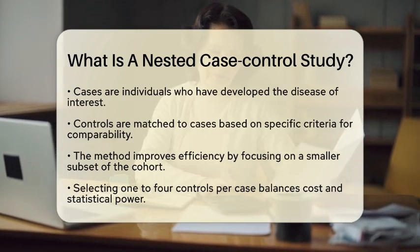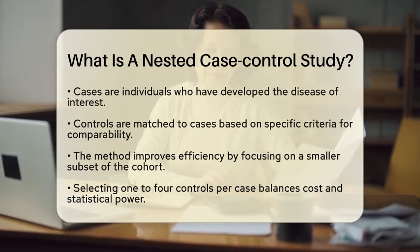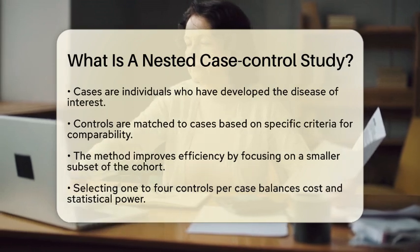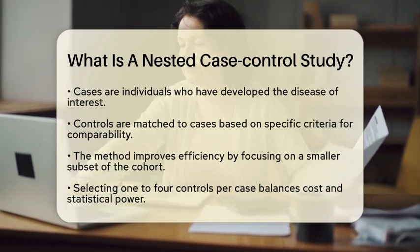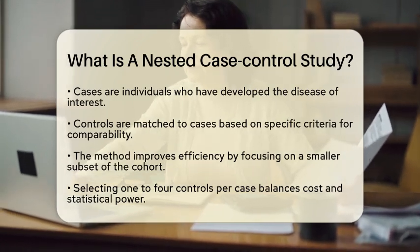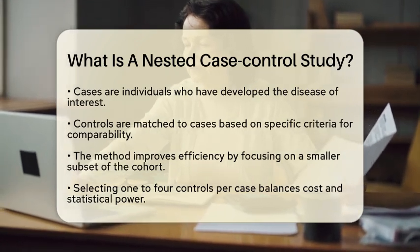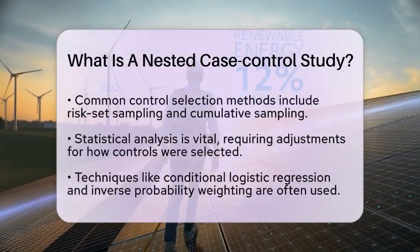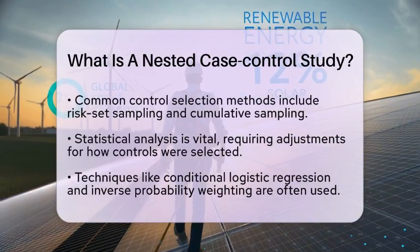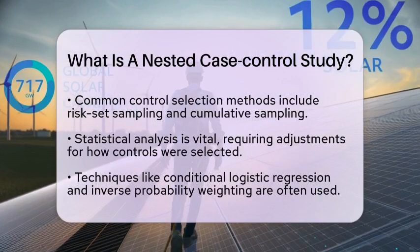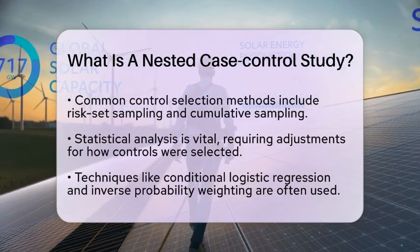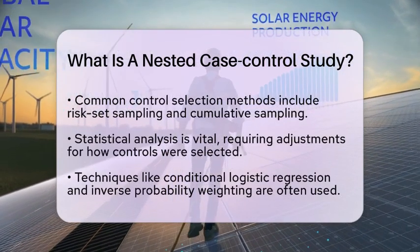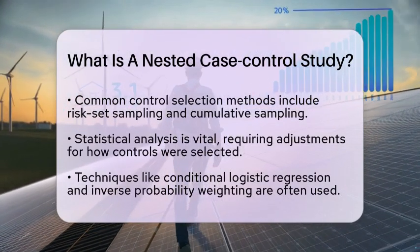When it comes to selecting controls, there are different methods. One common approach is risk-set sampling, where controls are chosen at the time each case occurs. Another method is cumulative sampling, where controls are selected based on not having developed the outcome over a specified period.